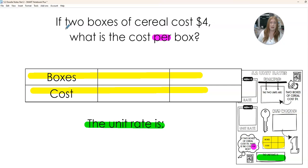How many boxes are we buying? Two. So we're starting with two boxes and that costs $4. And we always want to get these labels - boxes, cost or money.